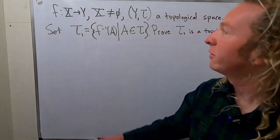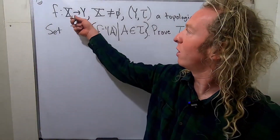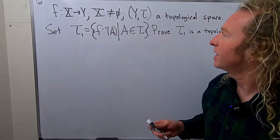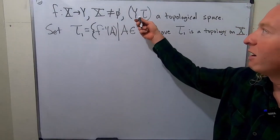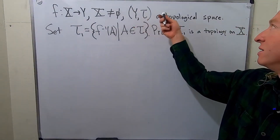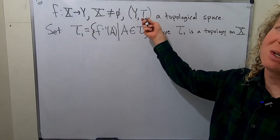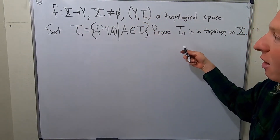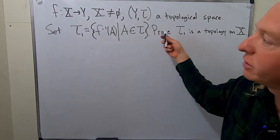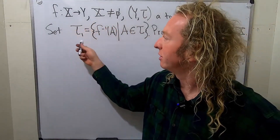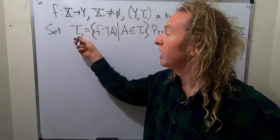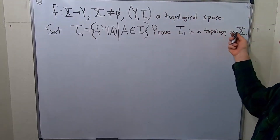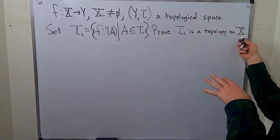Hi everyone. In this video we have a function from X to Y, where X is a non-empty set and Y is a topological space, so tau is a topology on Y. We're going to prove that this new set, tau sub 1, actually defines a topology on capital X.